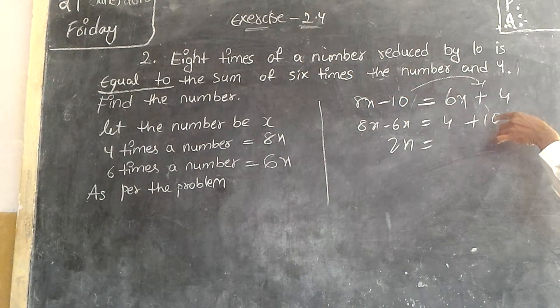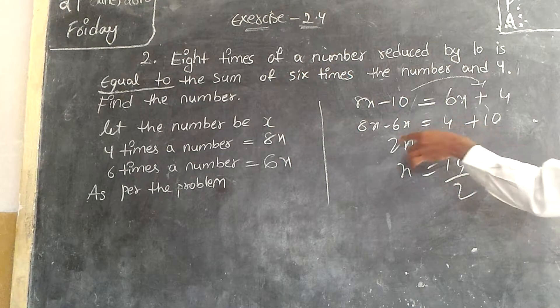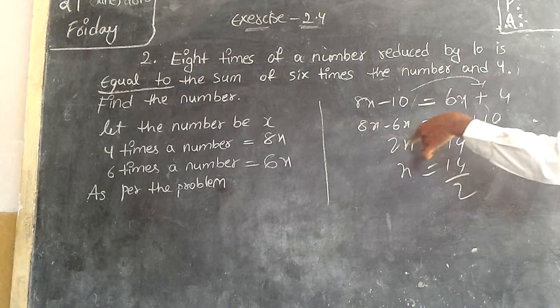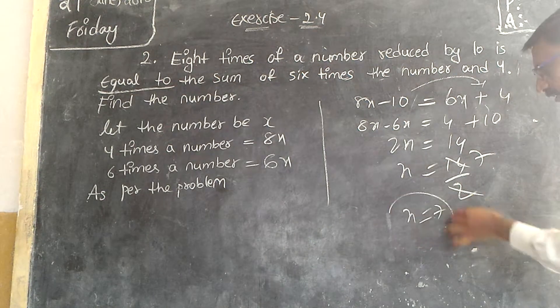4 plus 10. 14. Then x is equal to 14 by 2. Because 2 times x. 2 is multiplied by 2. It divides. How many times? 7 times. So x is equal to 7.